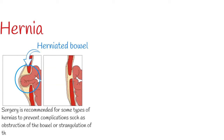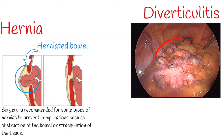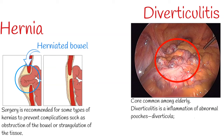Diverticulitis is more common among the elderly. It is an inflammation of abnormal pouches — diverticula — which can develop in the wall of the large intestine. Symptoms typically include lower abdominal pain of sudden onset, though the onset may also occur over a few days. There may also be nausea and diarrhea or constipation.